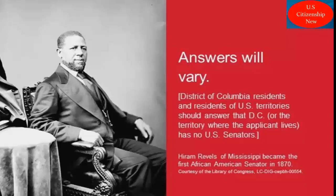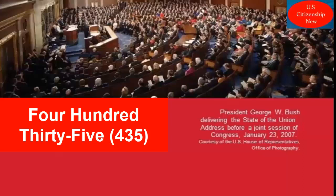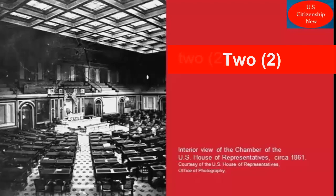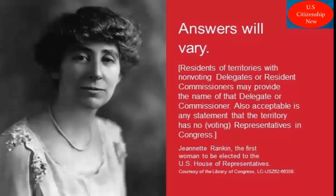District of Columbia residents and residents of U.S. territories should answer that D.C. or the territory where the applicant lives has no U.S. Senators. The House of Representatives has how many voting members? 435. We elect a U.S. Representative for how many years? 2. Name your U.S. Representative. Answers will vary. Residents of territories with non-voting delegates or resident commissioners may provide the name of that delegate or commissioner. Also acceptable is any statement that the territory has no voting representatives in Congress.